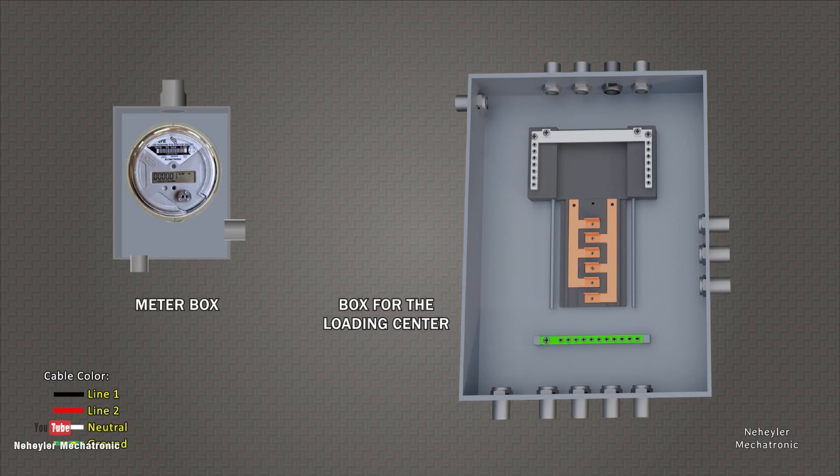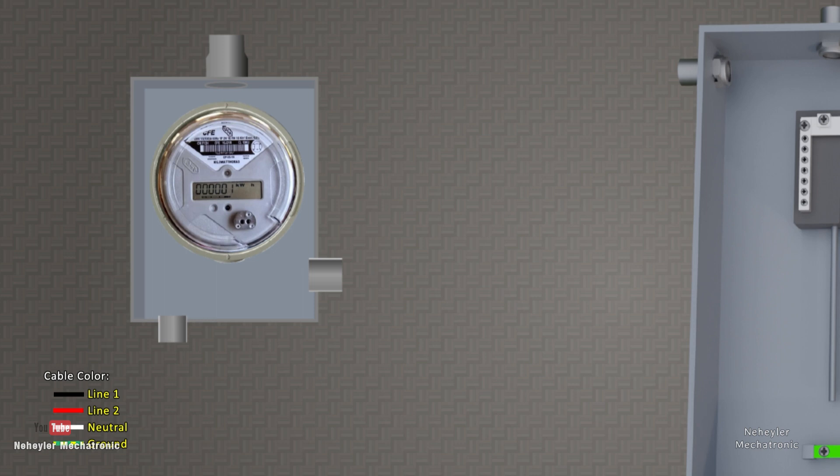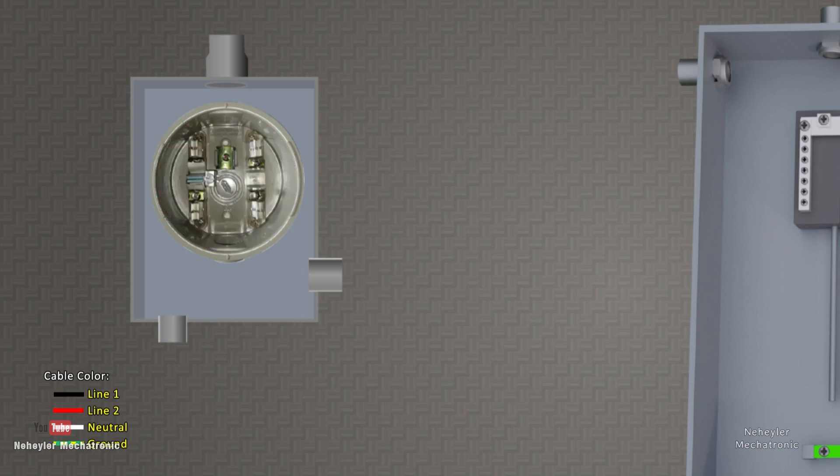Shown here is the box that houses the meter or counter, and the box where the load center that will distribute the electrical energy to the entire home will be mounted. Let's focus on the meter box. If we remove this element, we would have the base of the meter where the electrical cables will be connected.